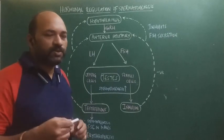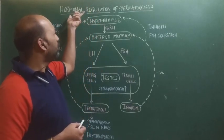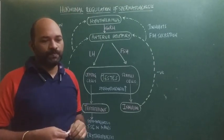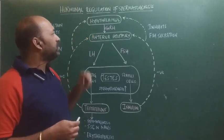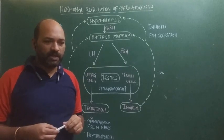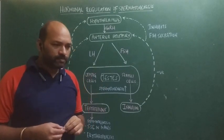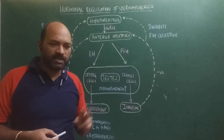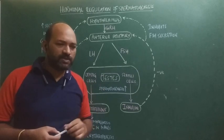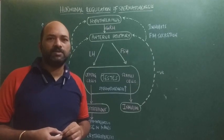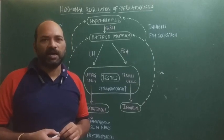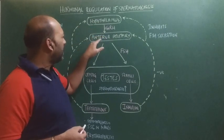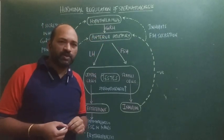In today's video we will discuss how spermatogenesis is regulated by various hormones. The hypothalamus is a part of the brain. It mainly secretes two types of hormones: releasing hormones and inhibiting hormones. The hypothalamus controls the anterior pituitary, which is said to be the master gland.